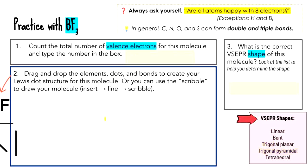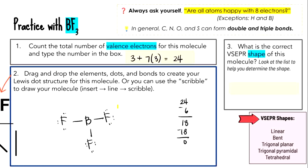Go ahead and try BF3 on your own. Keep in mind that boron has an exception — it doesn't want eight valence electrons; it's happy with six. You should have started with 24 valence electrons. After drawing three bonds, subtract six to get 18. Those 18 go on the outside atoms. After placing them on the outside atoms, you've used all 18 with none left. All atoms are satisfied — boron with six, fluorines with eight. Because boron has no lone pair, BF3 is a trigonal planar shape.